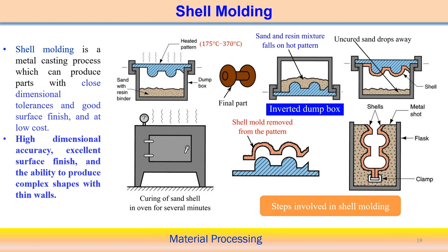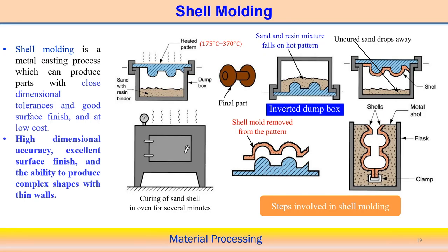How it works is quite simple. First, we create the pattern — the pattern is heated to a temperature range of 175 to 370 degrees centigrade. Then, sand with a resin binder already exists in the dump box. If you look at the figure, the sand with resin is already there, and then we heat the pattern.